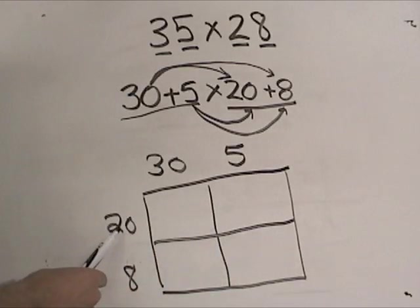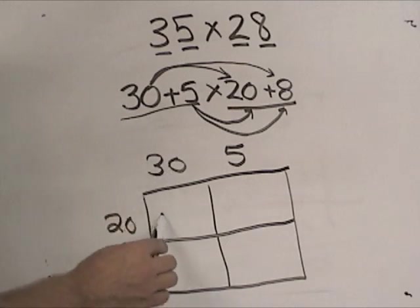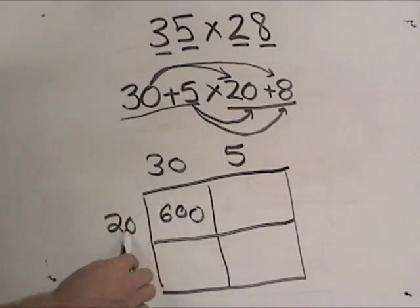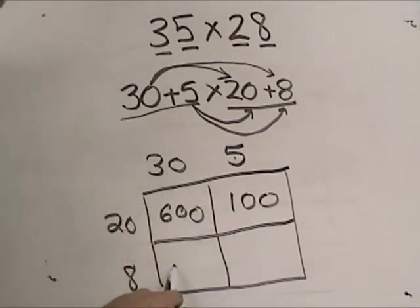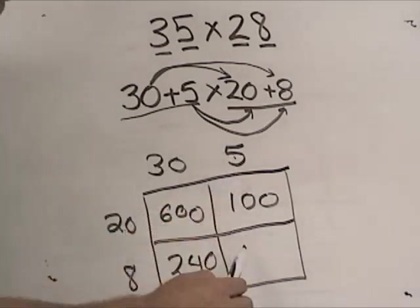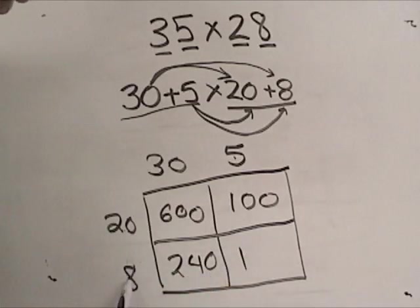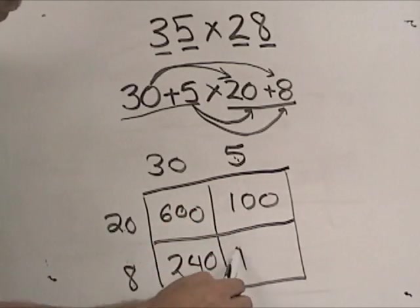Then, we just multiply the two sides of the box. 20 times 30 is 600. 20 times 5 is 100. 8 times 30 is 240. 20 times 5 is—oops, I'm sorry—8 times 5 is 40.